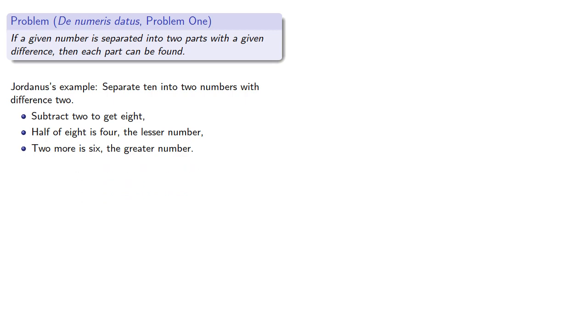And again, we can anachronistically introduce some modern notation. We know that the sum is ten, and the difference is two. So if we subtract the one from the other, we get, divide by two gives us, and that's our smaller number. And we can compute the larger number.